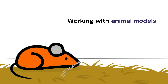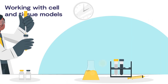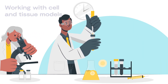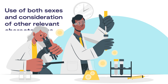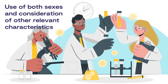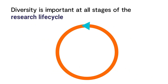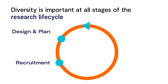When working with animal models or with cell and tissue models, you should use both sexes and consider whether other characteristics are relevant. Considering diversity is important at all stages of the research lifecycle, from design through recruitment and analysis to the reporting of results.